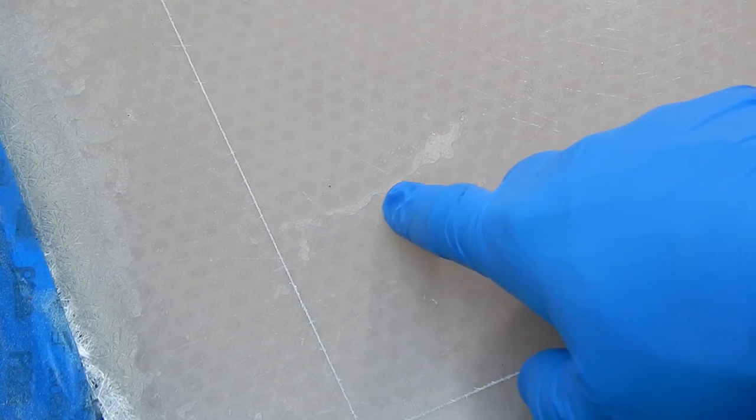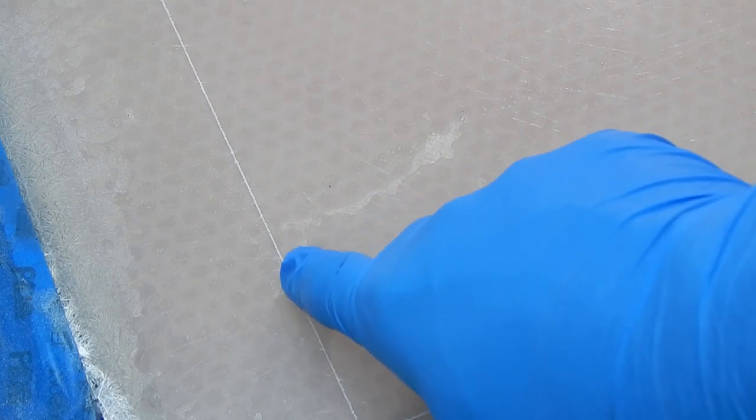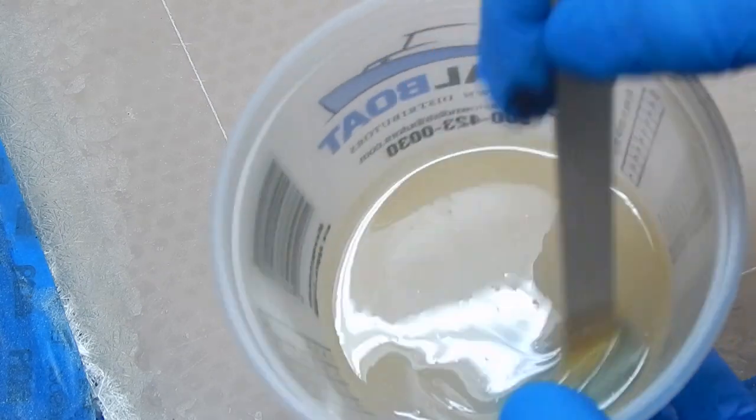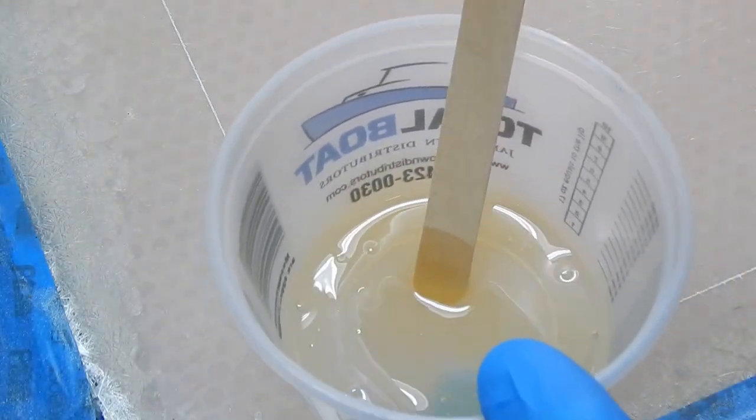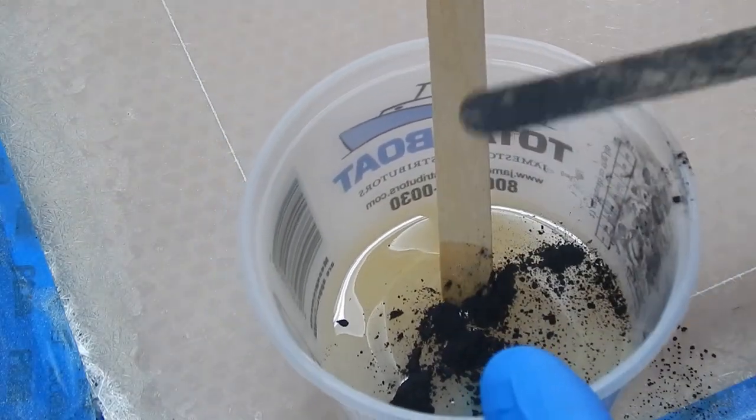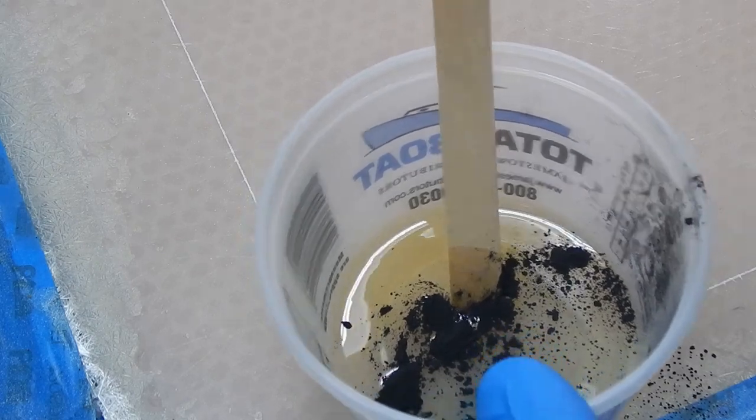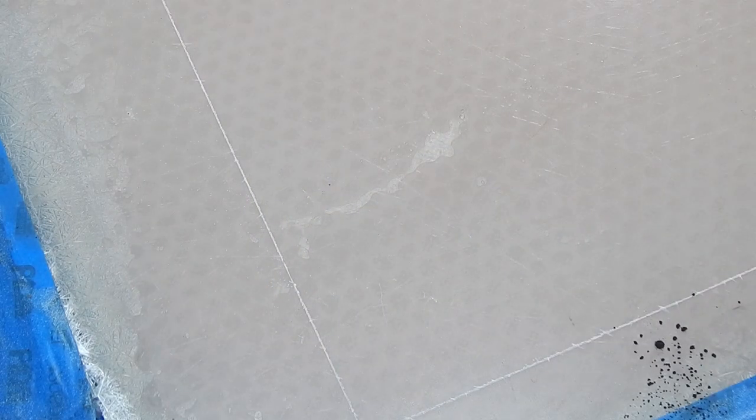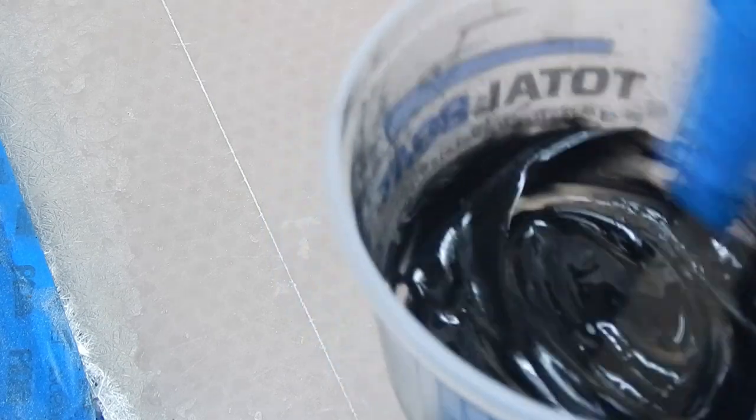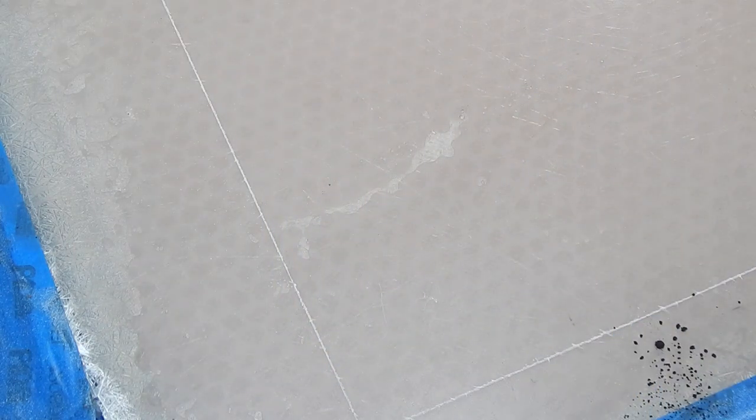And I'm going to try to repair it here just to show the process. Here is a little bit of epoxy because it's easier. This could be done with polyester resin too. But I'm mixing some carbon black graphite powder just to give it black color so it's easier to see.